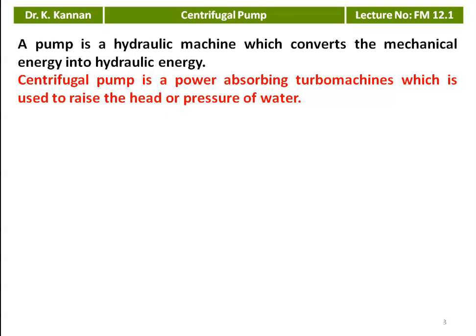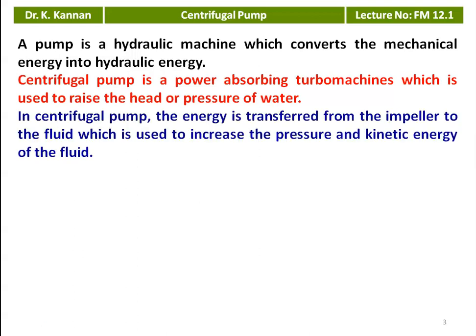In a power plant, water circulation system, or municipal water distribution system, the pump pressurizes the fluid to circulate at higher pressure. The centrifugal pump is used to raise the head or pressure of the water. In a centrifugal pump, energy is transferred from the impeller to the fluid, which increases both the pressure and kinetic energy of the fluid. When the fluid passes through the impeller, the pressure and kinetic energy of the water — or any fluid — increase.